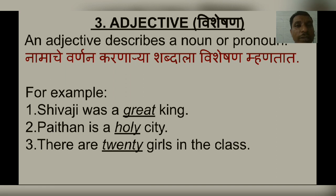Third, adjective. An adjective describes a noun or pronoun. For example: 'Shivaji was a great king.' Here the word 'great' is underlined — it is an adjective because it describes the noun 'king.' 'Paithan is a holy city' — the adjective 'holy' describes the noun 'city.' 'There are 20 girls in the class' — the word '20' is an adjective describing the noun 'girls.'